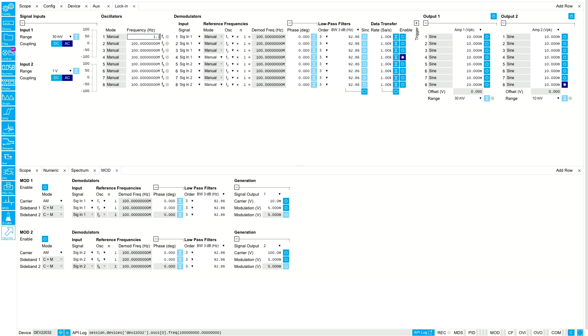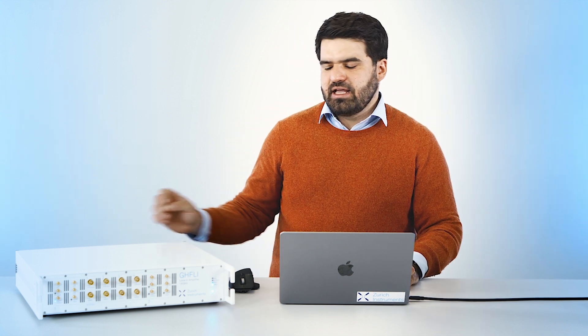I enable the module, enable the carrier output, and turn on the signal output. Now let's look at the generated signal by looping it back into the input of the instrument.